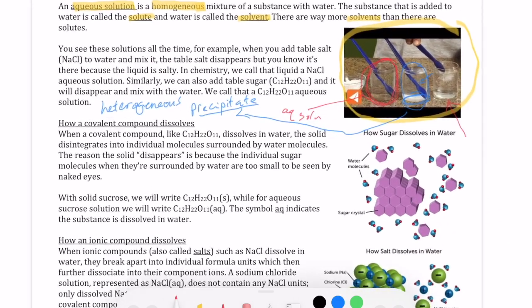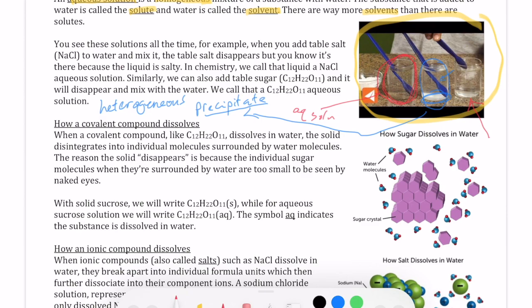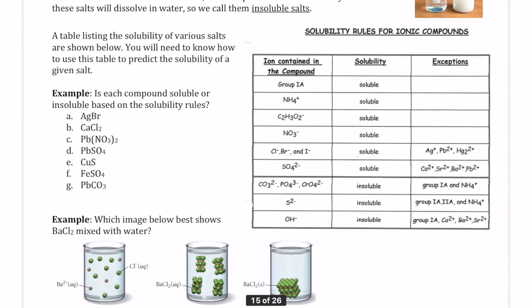So how do we know which ones will dissolve and which ones won't? We're going to use something called the solubility rules. This is only applicable to ionic compounds. So the solubility rules tells you which of these ionic compounds are going to be soluble, which means that when you mix them with water, they're going to form that homogeneous mixture. And which ones are insoluble, which means that they're going to form two different phases.